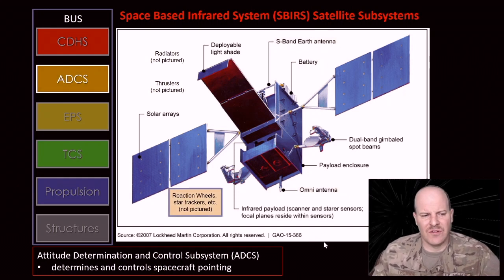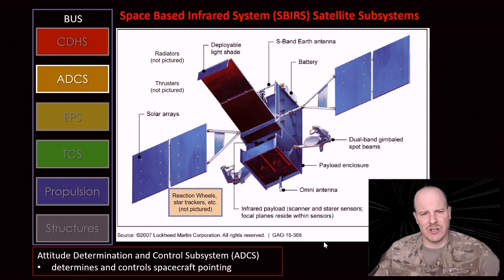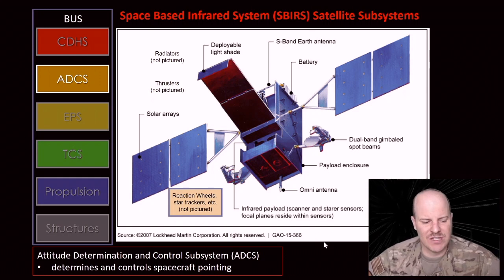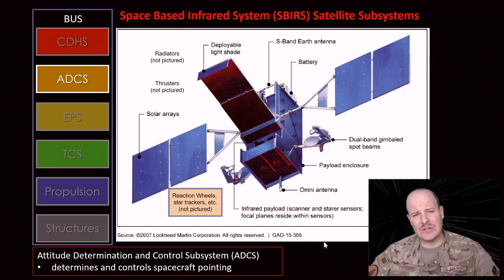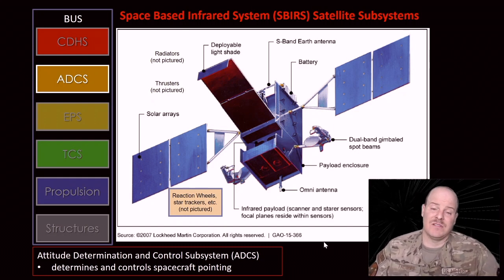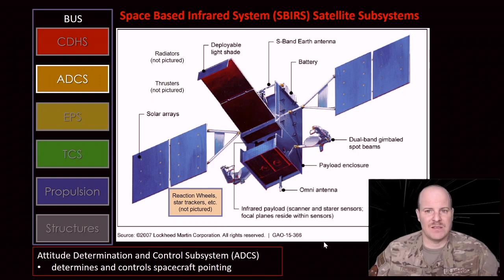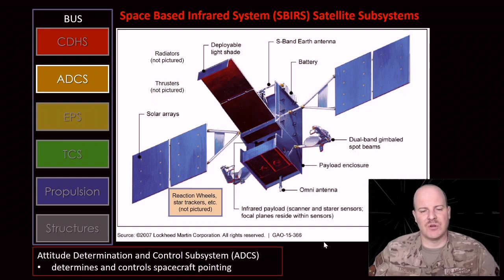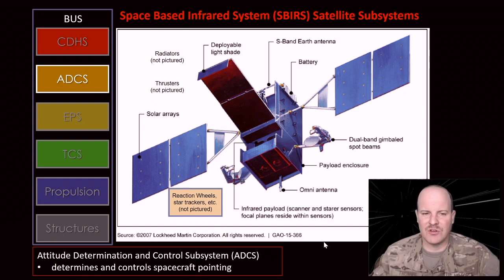SBIRS has some way to control itself — to control its pointing, meaning which direction it's actually looking in orbit. It uses the Attitude Determination and Control Subsystem. The name says it all: attitude is how the spacecraft is pointing, determination is how it determines where it's pointing, and control is how it actually points to not just where it is but where it wants to go. So it determines where it's at, and then it somehow controls itself to actually point in the direction it wants. We're going to talk more about how it does that in future lessons.